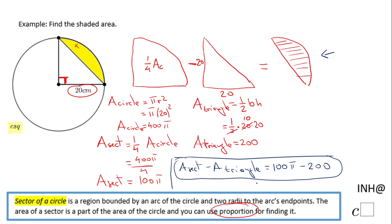If you need an approximation, obviously you're going to have to grab a calculator, and the shaded area will be, using the calculator, 100π - 200, I end up with 114.159 square centimeters.